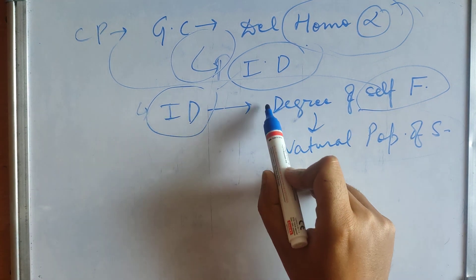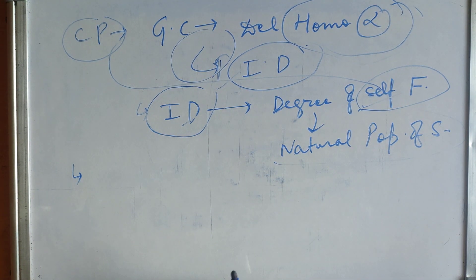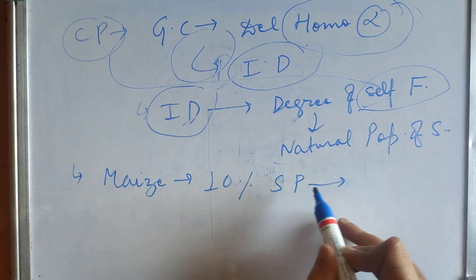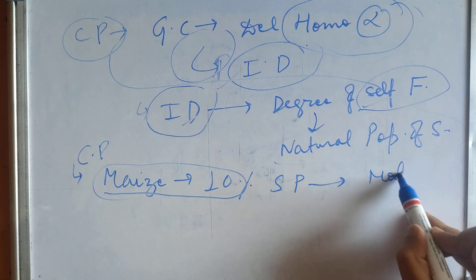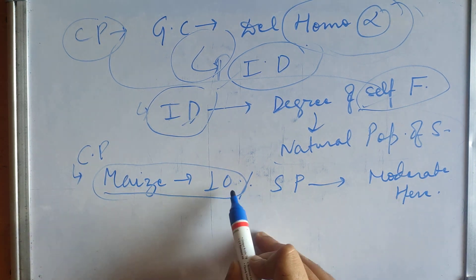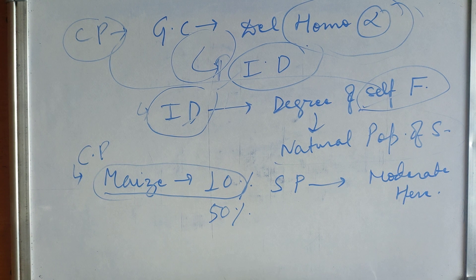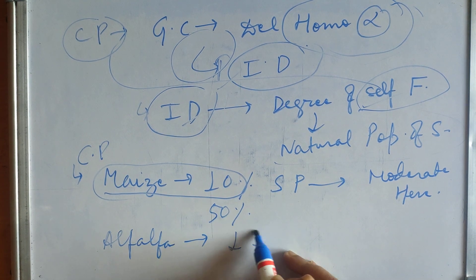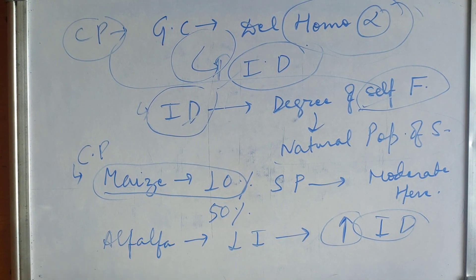More self-pollination leads to more severe inbreeding depression in cross-pollinated species. For example, cross-fertilized maize shows about 10 percent self-pollination, so inbreeding depression is moderate. But in crops showing 50 percent self-pollination, inbreeding depression would be very high. Alfalfa, which shows little natural self-pollination, results in very severe inbreeding depression when inbred.